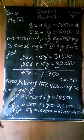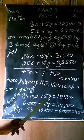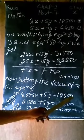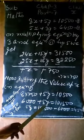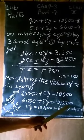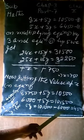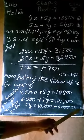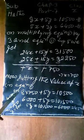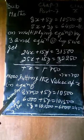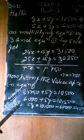Now putting the value of x in equation first: 8 into 750 plus 5y equals 10,500. Multiplying 8 times 750 gives 6000 plus 5y equals 10,500. So 5y equals 10,500 minus 6,000 equals 4,500. Then y equals 4,500 by 5 equals 900. So the cost of one table is 900 and one chair is 750.